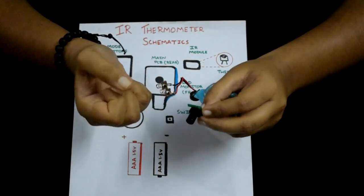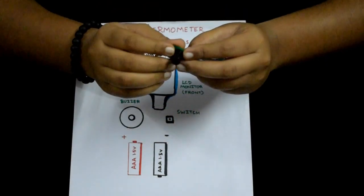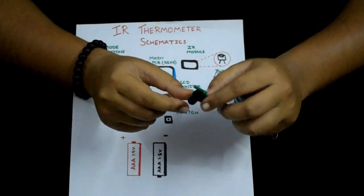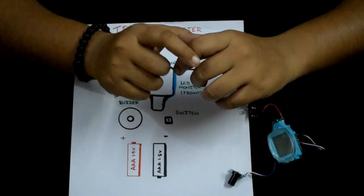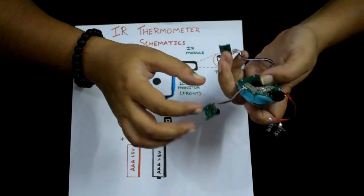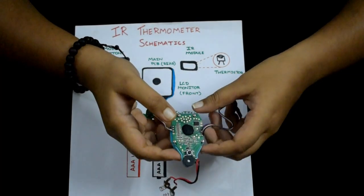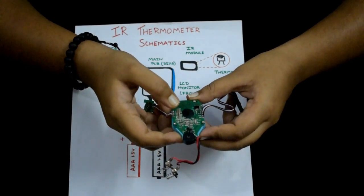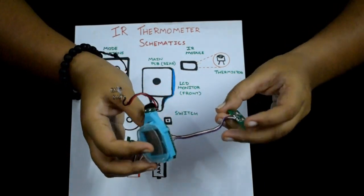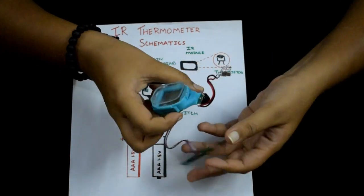The thermistor works on a principle where the change in heat produces a change in the resistance. This change in resistance is conveyed to the PCB board here, which calibrates it into the appropriate temperature measurement. So that's pretty much how this works.